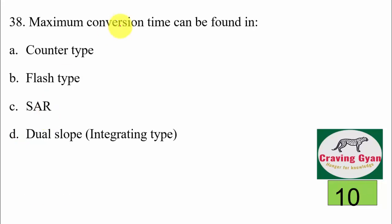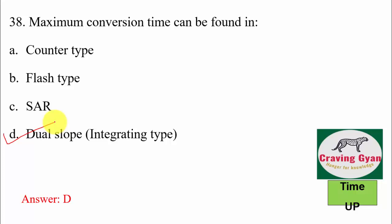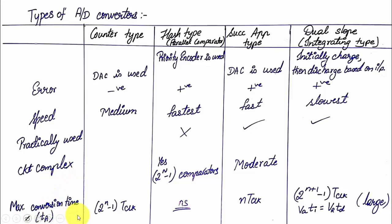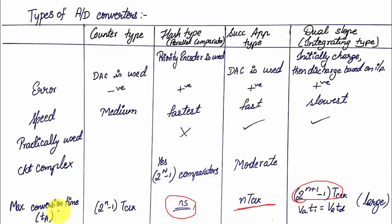38th question: maximum conversion time can be found in — counter type, flash type, SAR, or dual slope? Maximum conversion time is found in dual slope, given by (2^(n+1) − 1) × T_clock. From the table: counter type needs (2ⁿ − 1) clock pulses, flash type operates in nanoseconds, SAR needs n × T_clock, and dual slope needs (2^(n+1) − 1) × T_clock. When n is large, conversion time T_a becomes a large quantity. Also remember the formula: V_a × T_a = V_a × T_d.